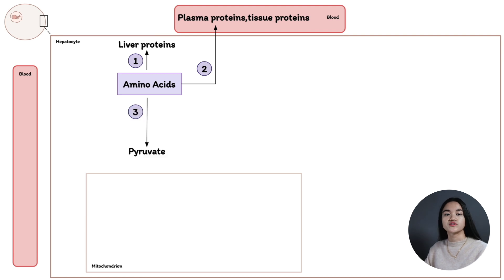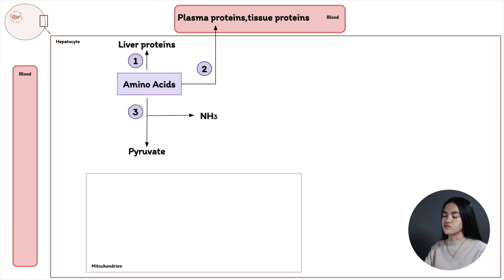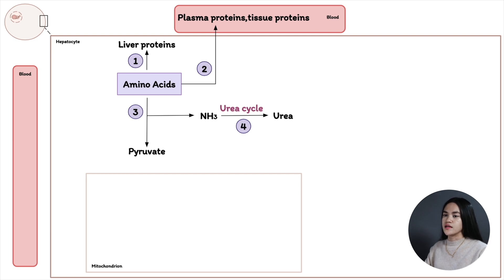Amino acids are broken down by removing the amino group — a process called transamination — separating the amino group from the carbon skeleton. The carbon skeleton can be broken down to pyruvate and other citric acid cycle intermediates, yielding ammonia. The ammonia released is converted to urea via the urea cycle, because ammonia is toxic and can cause brain damage and cognitive impairment. Urea is non-toxic and water-soluble and is exported to the kidneys for excretion.